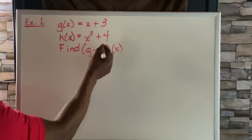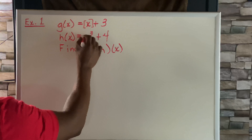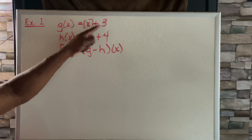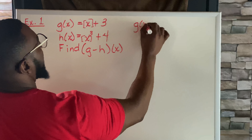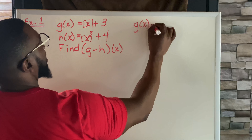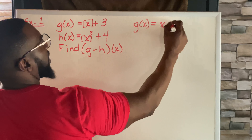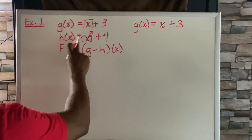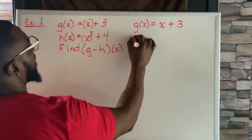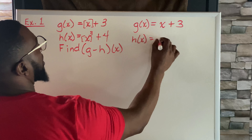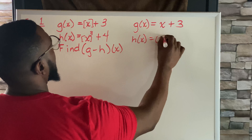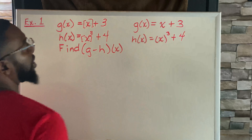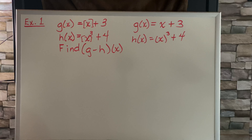This x has to be the one that we substitute in for both of the x's — we want to go right here and right here. So g of x equals x plus 3, and h of x equals x cubed plus 4.